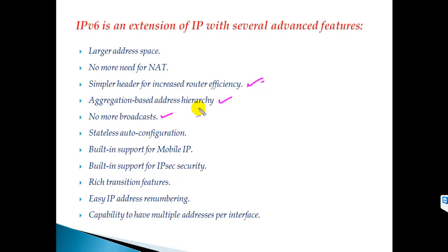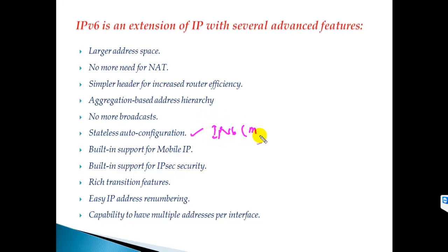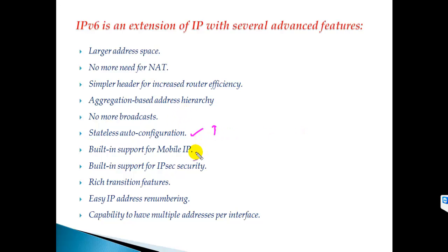There is no broadcast in IPv6 — unlike IPv4, which has a broadcast ID used to send a broadcast to all devices within the network, IPv6 has no broadcast ID or concept of broadcast. We'll get into the categories of addressing — unicast, multicast, anycast — in the next section. IPv6 also supports stateless auto-configuration, where a device can get an IPv6 address by incorporating its own MAC address.